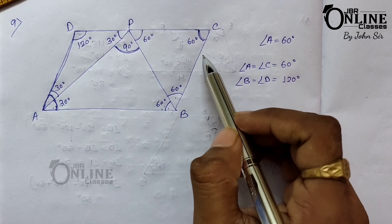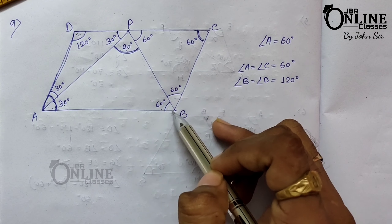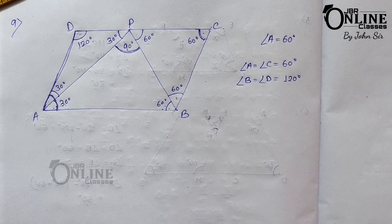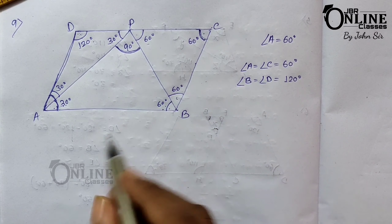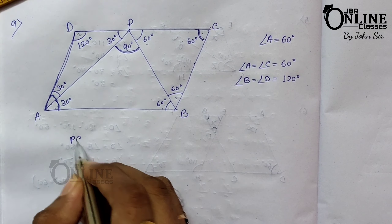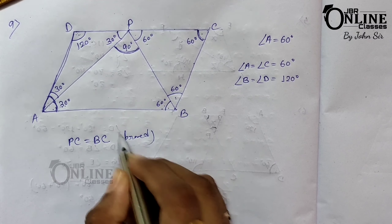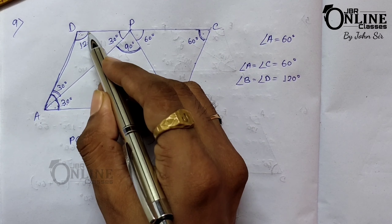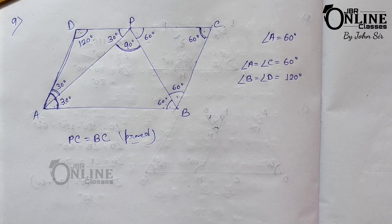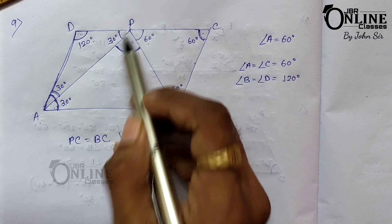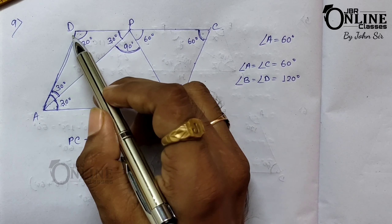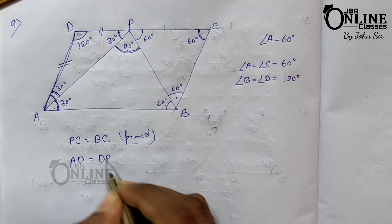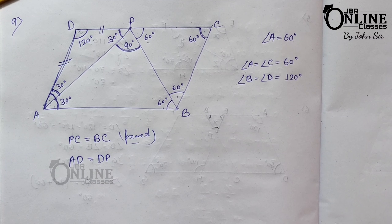In triangle PCB, angle C equals 60 degrees and angle B equals 60 degrees, so the remaining angle also equals 60 degrees — making it an equilateral triangle. Therefore PC equals BC, which is proved. In triangle ADP, one angle is 30 degrees and another is 120 degrees, so the third angle DPA also equals 30 degrees. Since two angles are equal, triangle ADP is isosceles, so AD equals DP — proved.